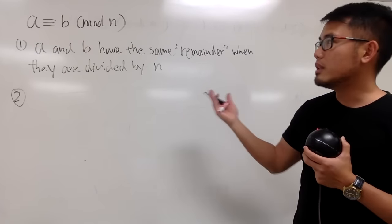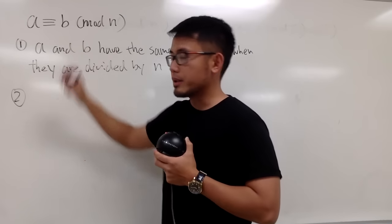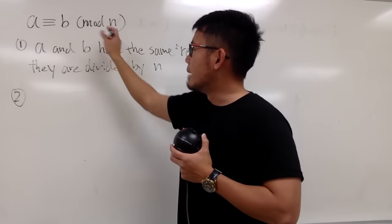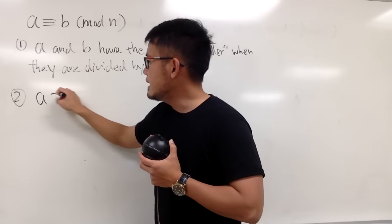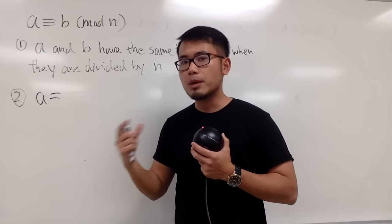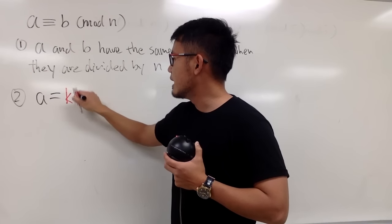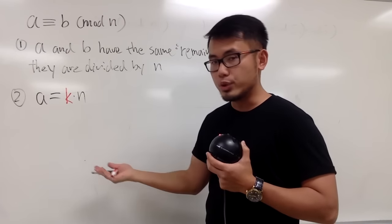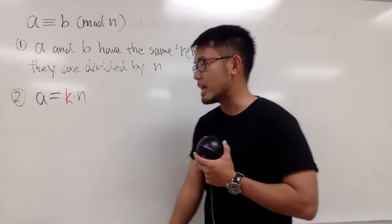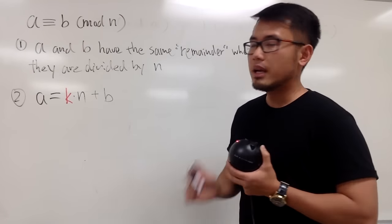The second thing is that I can write the following: when we have a is congruent to b mod n, we can say a is equal to—well, it's just going to be off by a multiple of n, and usually we can just say k times n for some number k, which we don't know yet, just keep it as it is for now—and then you add b to it.